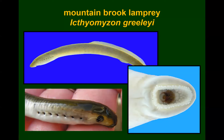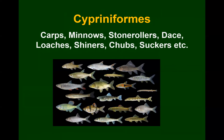The picture shown is of an adult. The juveniles don't look that much different — there are a couple of distinguishing features, but don't worry about that. Next we have Cypriniformes, a large and diverse order that includes carps, minnows, stone rollers, dace, loaches, shiners, chubs, suckers, and more.